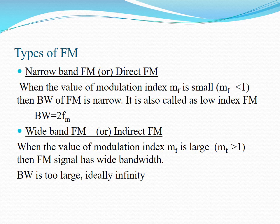Next, we see the types of FM. There are two types of frequency modulation. First one is narrow band FM and second one is wide band FM. When the modulation index is very small, the bandwidth is also very small; therefore it is called low index FM, where bandwidth = 2·fm. For wide band FM, if the modulation index value is large, the bandwidth is also large — ideally, the bandwidth is infinity — hence the name wide band FM.